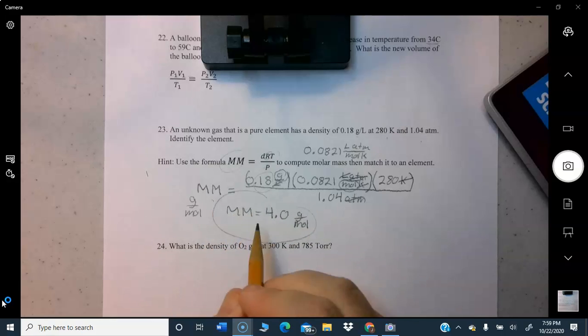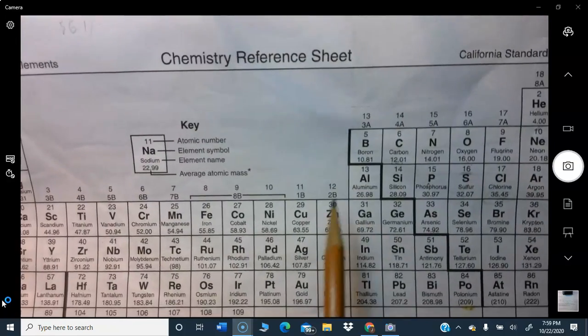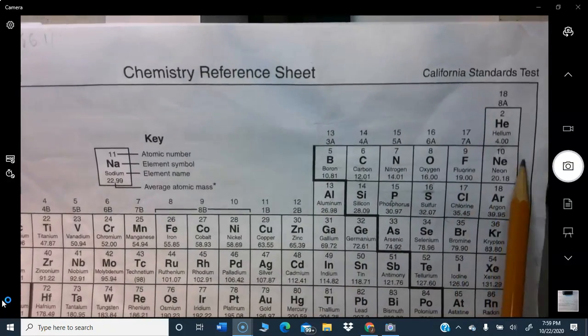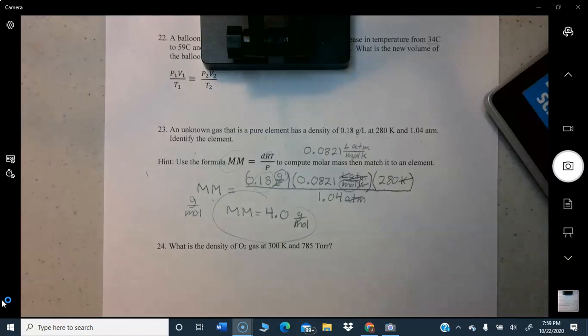So that's the molar mass, but the question is identify the element. It says it's a pure element, so we come over to the periodic table and we just hunt around on the periodic table for an element, a pure element with a 4. So there it is right there, it's helium. So the answer to the question is helium.